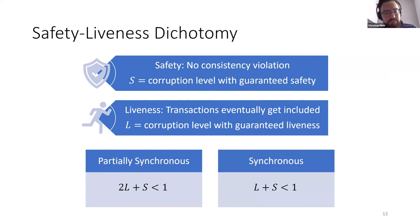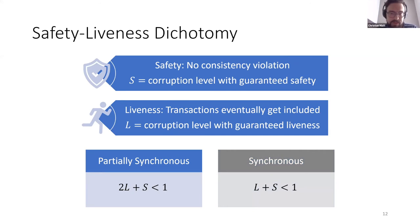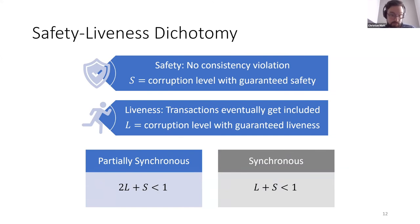If you have a protocol with parameter S, then as long as there's at most S corruption, the protocol will be safe. Similarly for L. What you can prove is that in the partially synchronous setting, this works if and only if 2L + S < 1, and in the synchronous setting L + S < 1. If you plug in equal parameters for L and S in the partially synchronous case, you get exactly one-third — that's what you get if you insist that L and S are equal, which is reasonable if you want both safety and liveness. For synchronous it's a half.